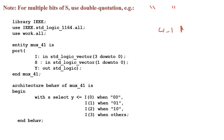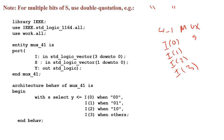A 4-to-1 mux means you have four options to choose from: i0, i1, i2, and i3. To choose between four options, the select bit s must have two bits. When s is 00, we choose option i0. For the last option, s must be 11, because 11 means 3 in decimal.